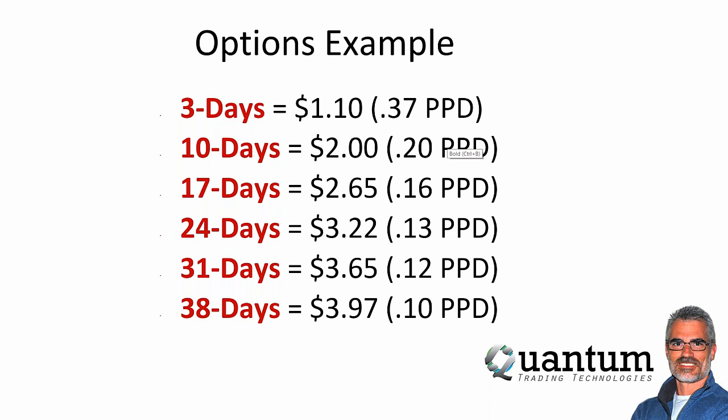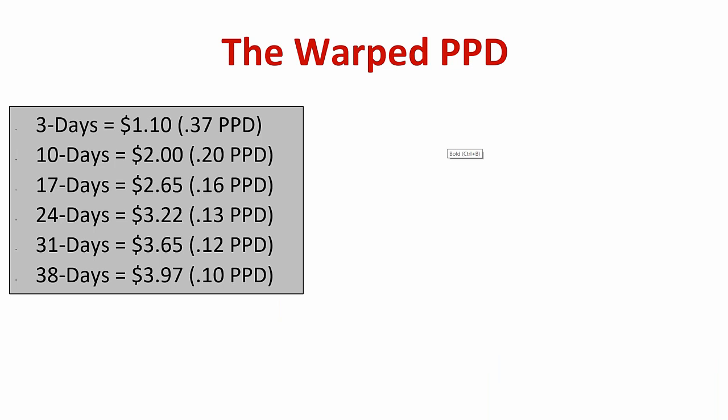Now I'm going to break it down just a little bit more so you can see how warped these values really are. Here is an at-the-money option — so all of the value is time value — at different expirations for the same strike: three days is about $1.00, 10 days is $2.17, 17 days is $2.65, up to 38 days at $3.97. The average PPD ranges from a high of $0.37 at three days to a low of $0.10 at 38 days. But it's actually better than that — because we're not going to hold on to the 38-day option for 38 days.